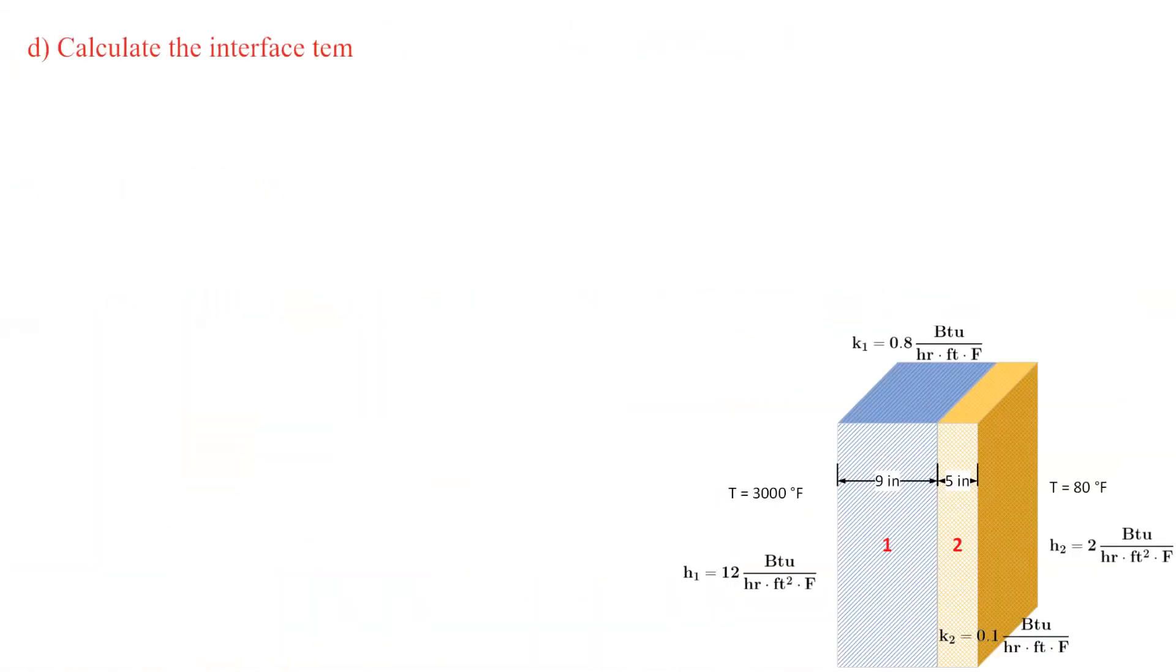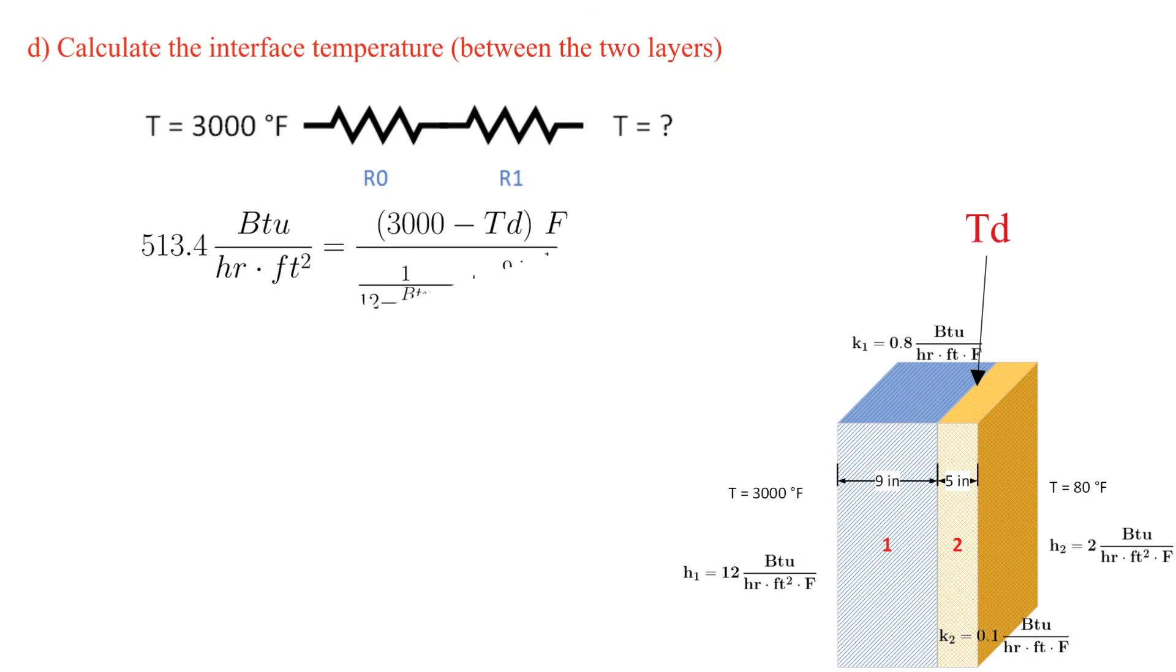In Part Delta, we find the contact temperature between the two slabs, which we label as temperature Delta. Following the same procedure, we obtain temperature Delta is equal to 2475.9 degrees Fahrenheit.